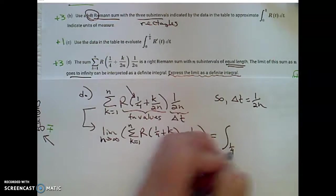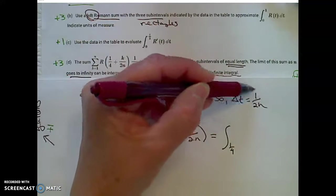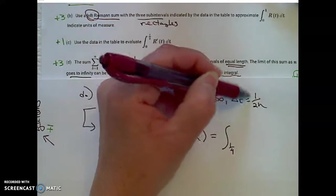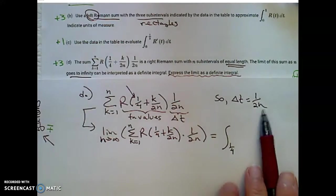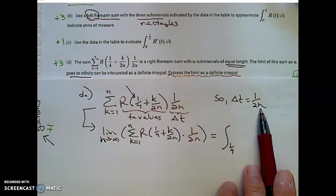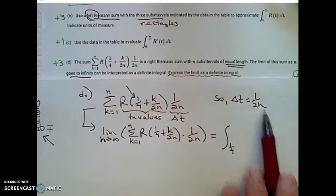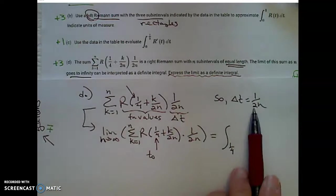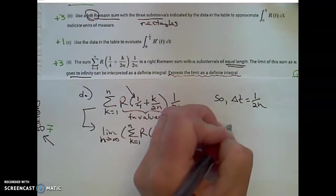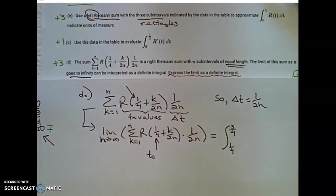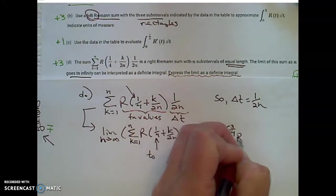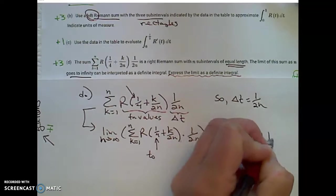We're going to take 1 half and split it into an infinite number of little tiny widths. We're going to take 1 half, a width of 1 half, and split it into an infinite number of little widths, little tiny rectangles. So that means that I'm going to start at 1 fourth. That's t sub 0. And I'm going to split 1 half. What's 1 fourth plus 1 half? That's 3 fourths. Into an infinite number of subintervals. I'm going to take my function values. In this case, r is a function of t. And multiply it times dt.